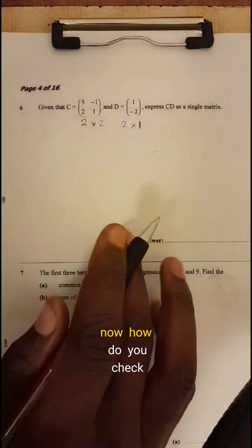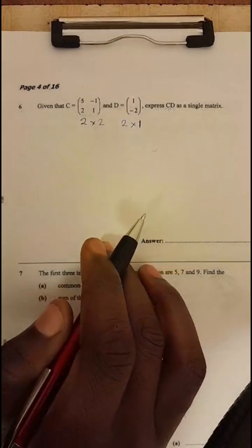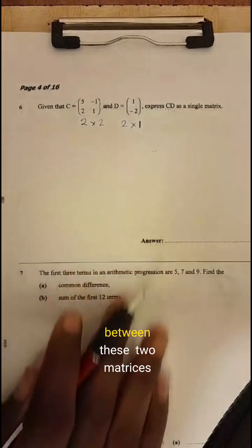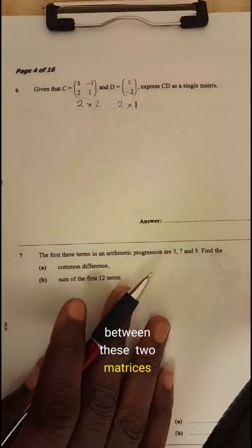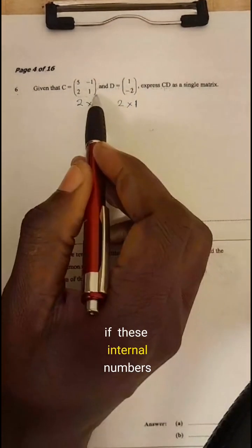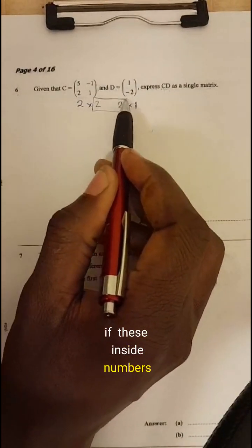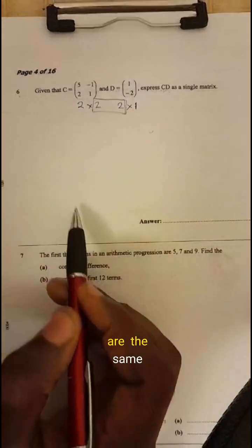So now, how do you check that multiplication exists between these two matrices? If these internal numbers, inside numbers, if these inside numbers are the same, then multiplication exists between these two matrices.